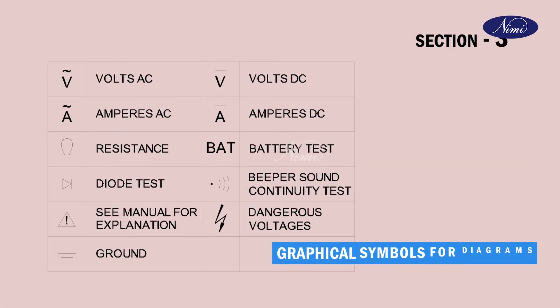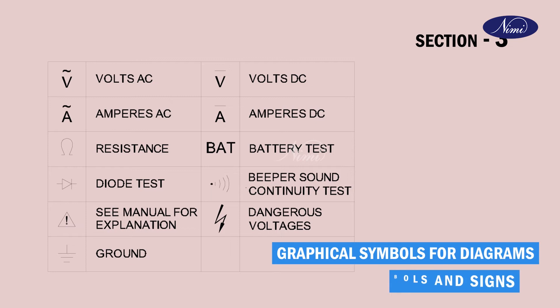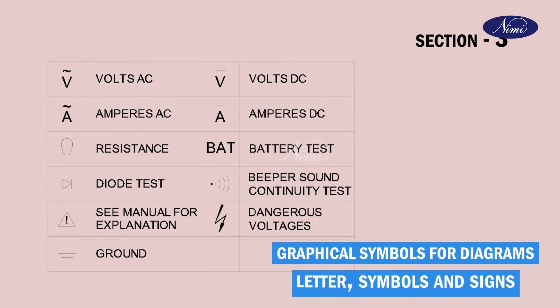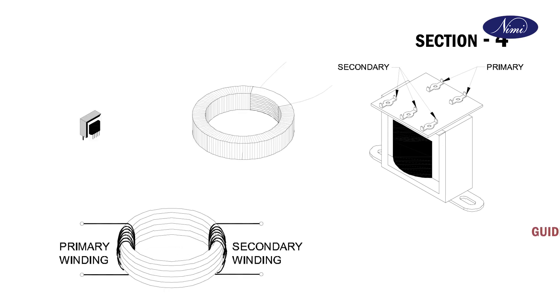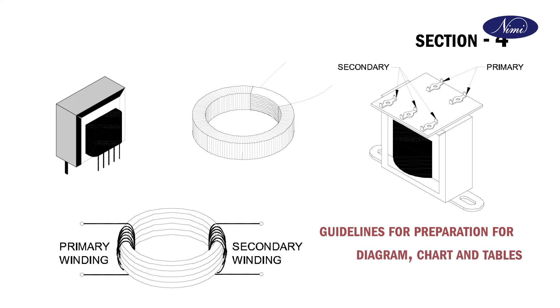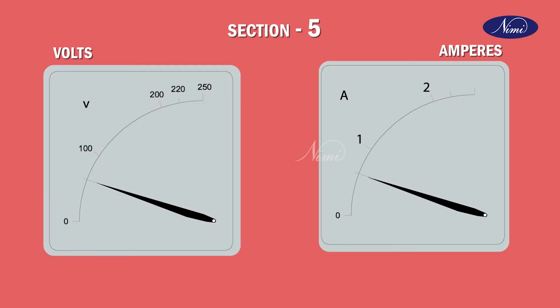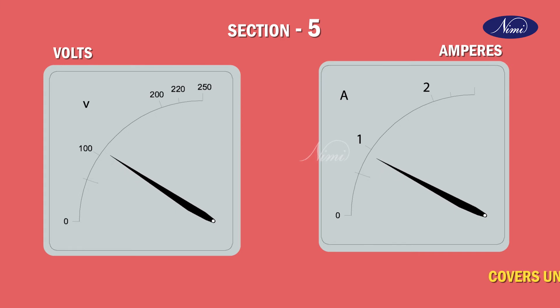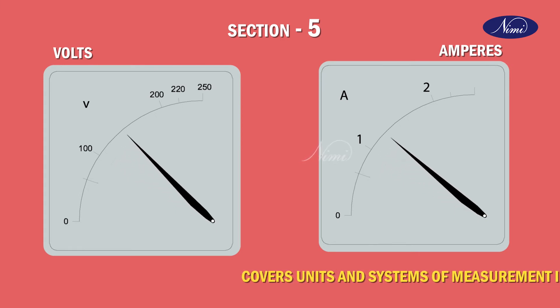Section 3 covers graphical symbols for diagrams, letter symbols and signs. Section 4 covers guidelines for preparation of diagrams, charts and tables in electro-technology and for marking of conductors. Section 5 covers units and systems of measurement in electro-technology.